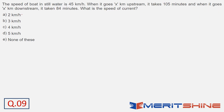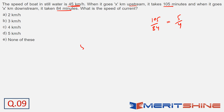Question number 9 — another sitter. What does it say? X kilometers upstream takes 105 minutes, X kilometers downstream takes 84 minutes. So 105 upon 84 — ratio of times taken is 5 upon 4. So the ratio of speeds is also 5 upon 4 inversely, meaning downstream to upstream. Speed in still water is 45, which is the average — so speeds are 50 and 40. That's downstream speed and upstream speed. Speed of the current is 50 minus 45, that is 5 kilometers per hour.